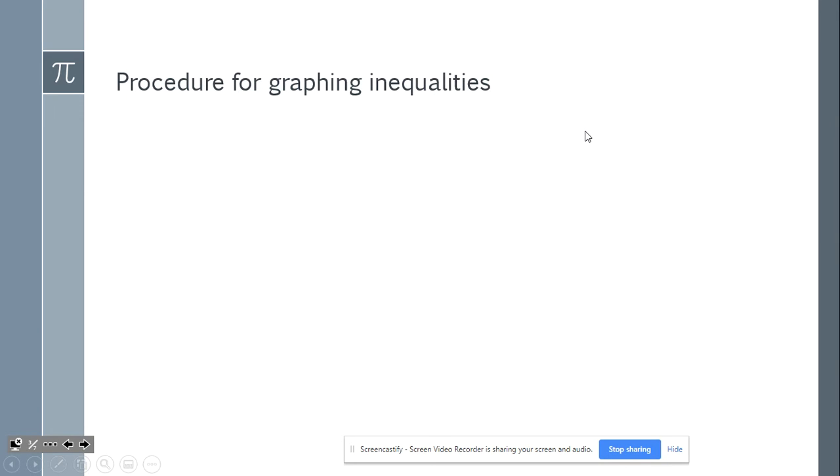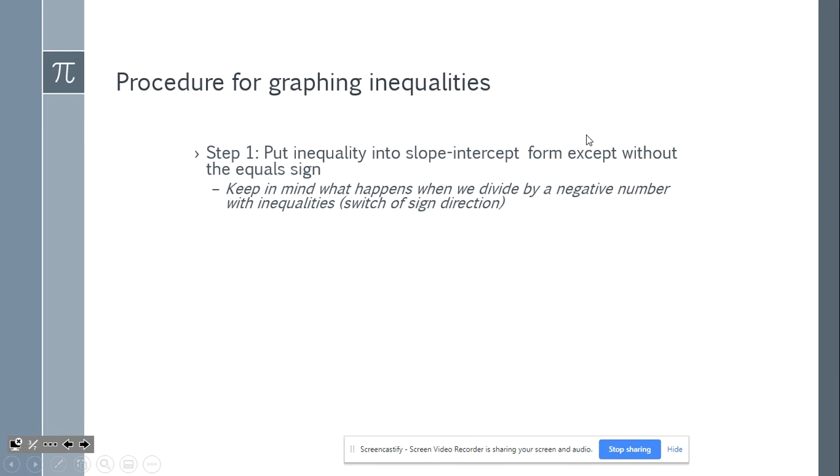Here's your procedure for graphing inequality. First, put the inequality in the slope-intercept form, except it will not have an equal sign. Remember to keep in mind that any time you're dividing by a negative number with inequalities, you must switch the direction of the sign. It also goes for if you're multiplying. Typically in this form, you'll only be dividing.